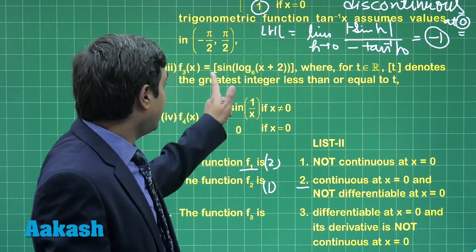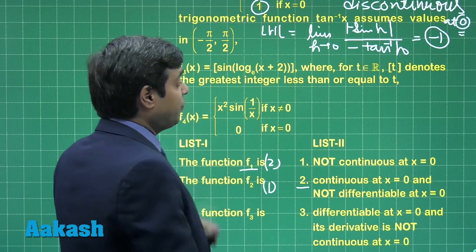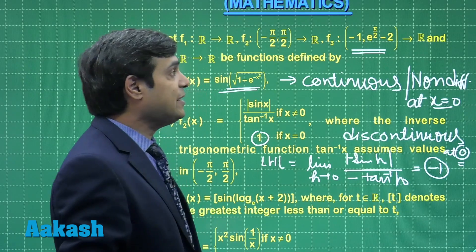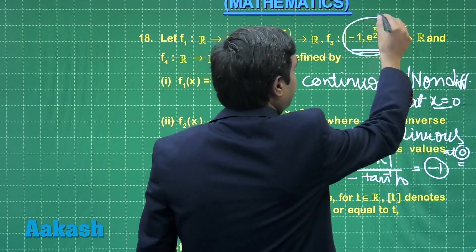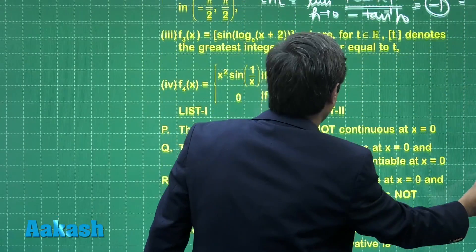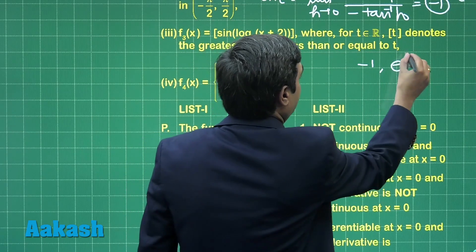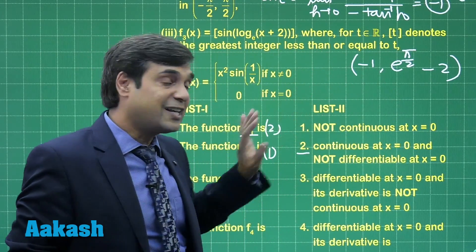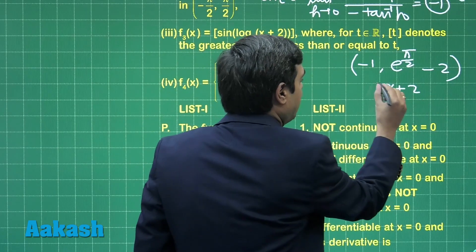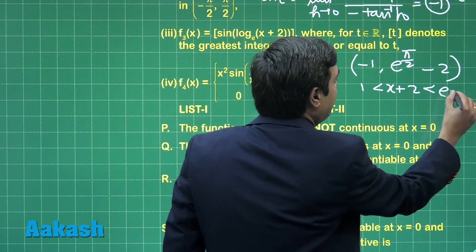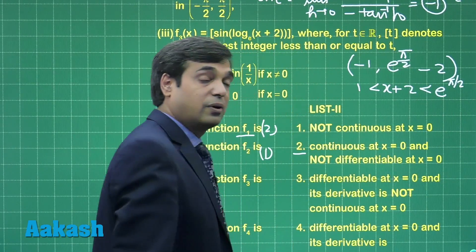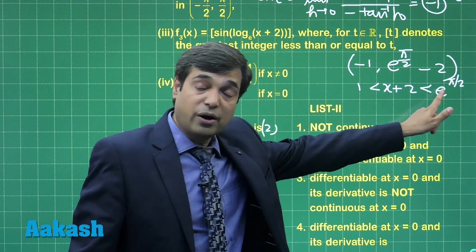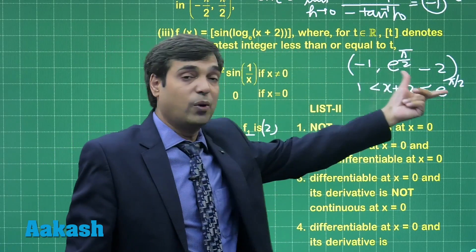Function f3 is greatest integer sin(log(x + 2)). The function f3 we have to consider its given domain as well: -1 to e^(π/2) - 2. When you go for this part, -1 to e^(π/2) - 2, x is lying in this interval, meaning x + 2, just add 2 on both sides, it will lie between 1 and e^(π/2). Function f3 is saying log(x + 2), so it will lie between log 1 and log e^(π/2), meaning this term is lying between 0 and π/2.